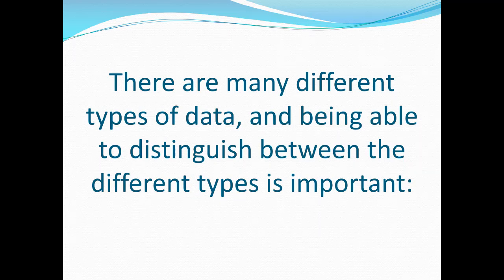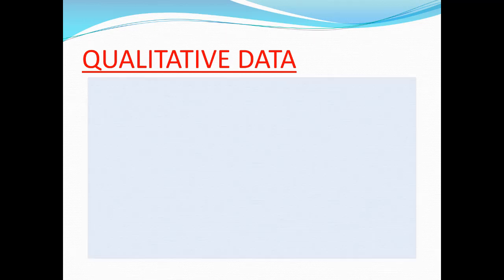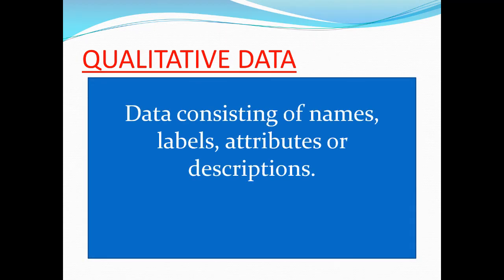The first kind of data is called qualitative data. Qualitative comes from the same root word as qualities. If you were asked to describe somebody and list their qualities, you might say they're smart, funny, or caring — descriptions of attributes the person has. So qualitative data consists of names, labels, attributes, or descriptions. This is completely non-numeric data.